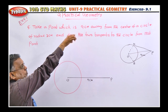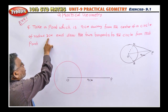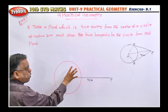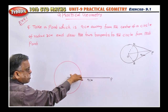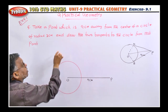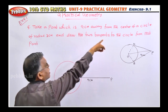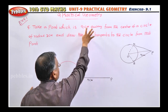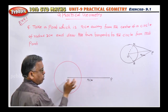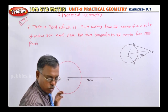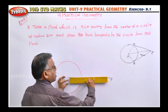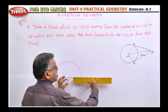That means you should draw the circle with O as center and radius 3 centimeters. Then, you should take a point P which is 9 centimeters away from O. This length OP should be 9 centimeters.